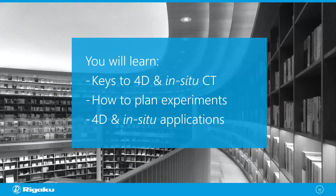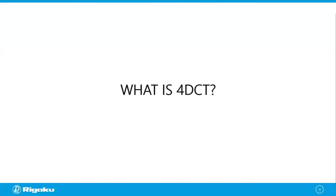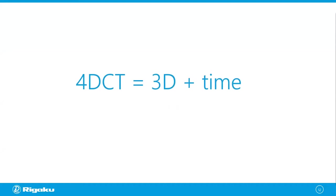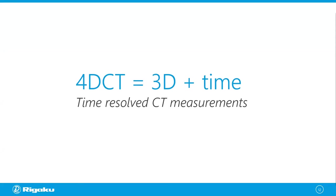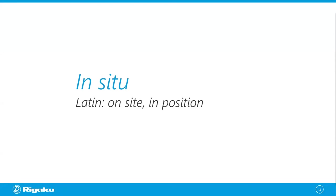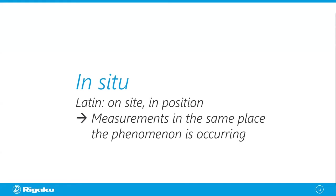Let's start with this question: what is 4D CT? 4D CT is a combination of 3D — that's regular CT — and time, where time is the fourth dimension. So 4D CT measurements are time-resolved CT measurements. The fourth dimension doesn't need to be time; it can be temperature or something else, but generally when we say 4D CT we're talking about time-resolved measurements. What about in-situ CT? The term in-situ in Latin means 'on site' or 'in position,' so in-situ measurements means we're doing measurements in the same place the phenomenon is occurring — we're not isolating the sample.